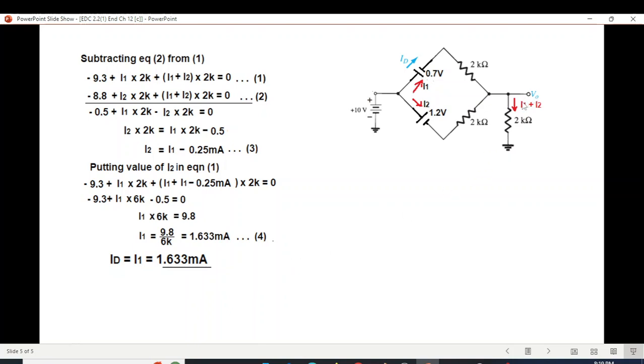Now to find V0 we need to find I2 also. So we put the value of I1 in this equation to find I2. So I2 is 1.383 milliampere.